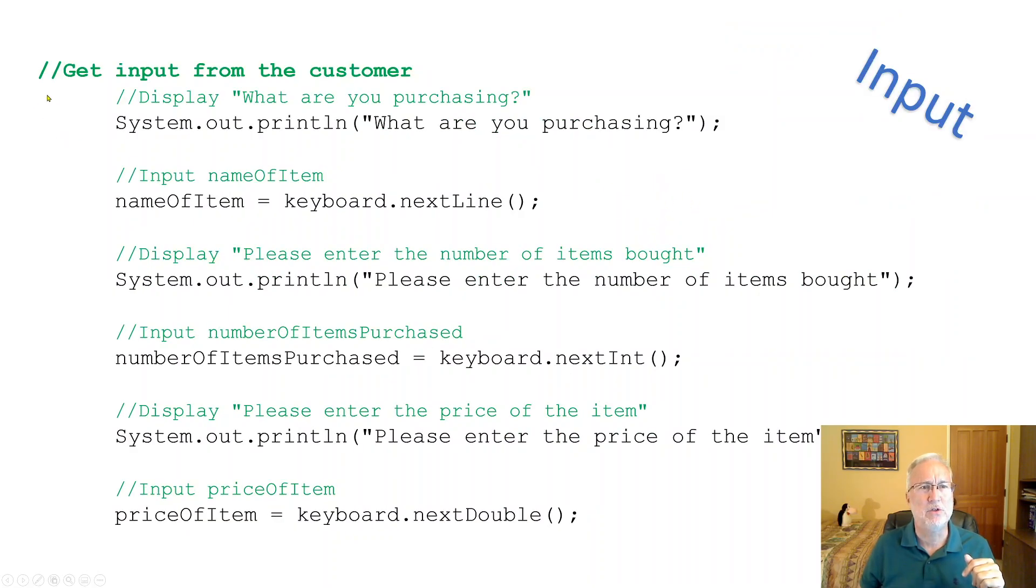Here's input. So here's prompts. System.out.println. What are you purchasing? Name of the item right here. Keyboard.nextLine. Another prompt. Another keyboard.nextInt. Then nextDouble.